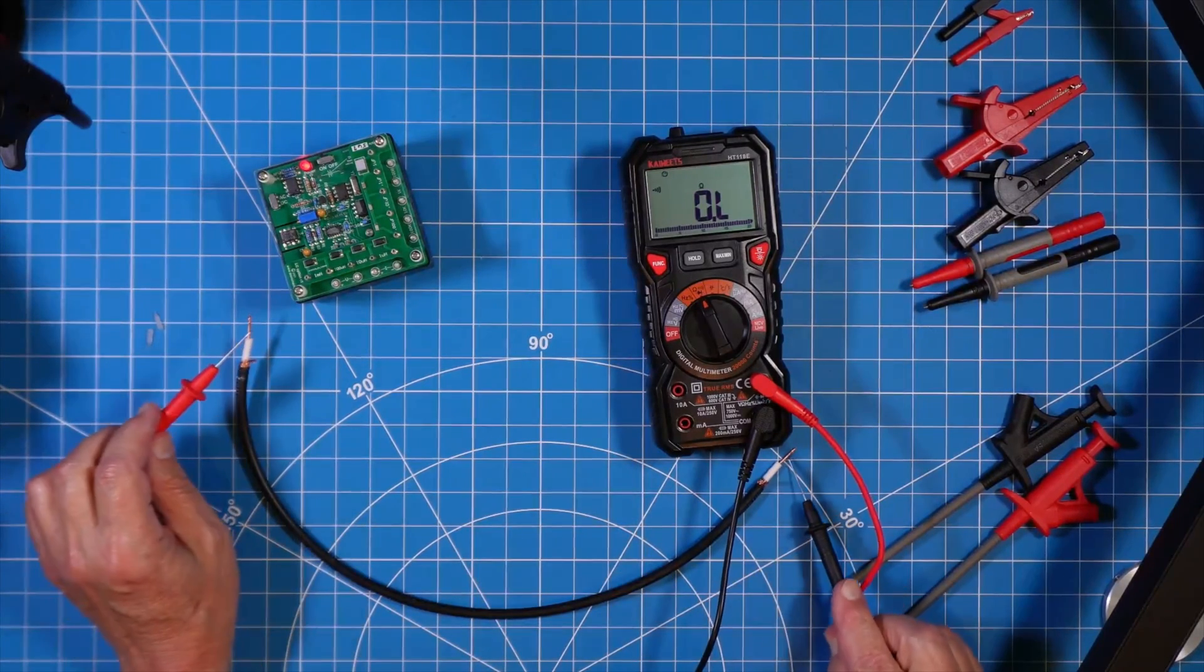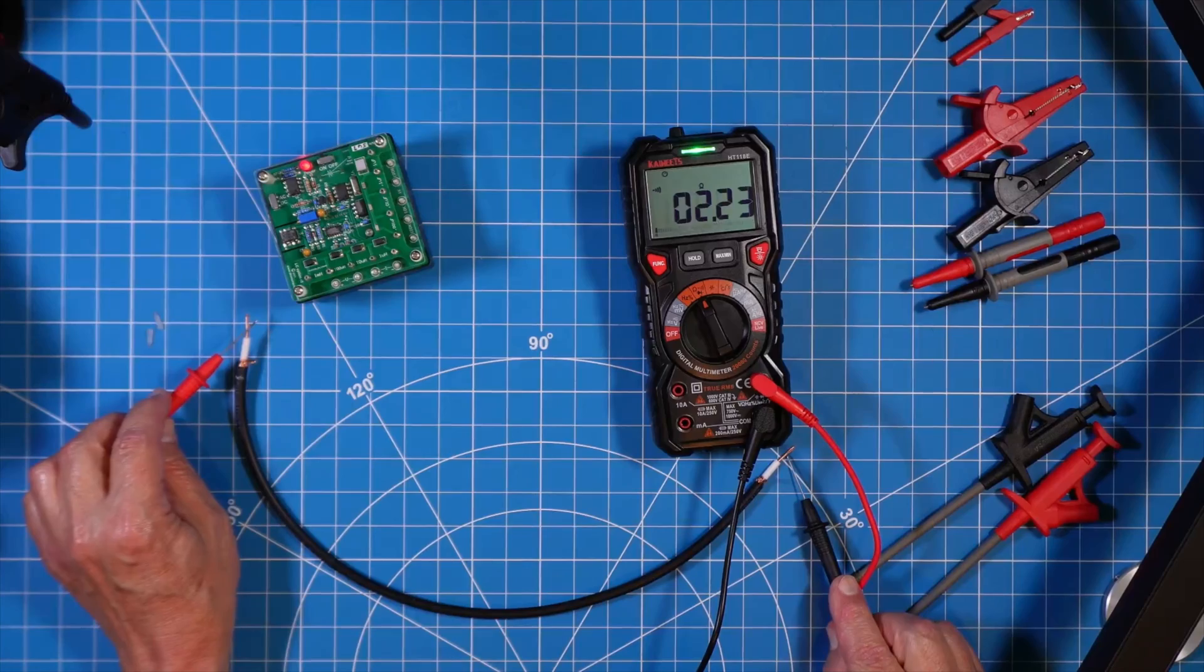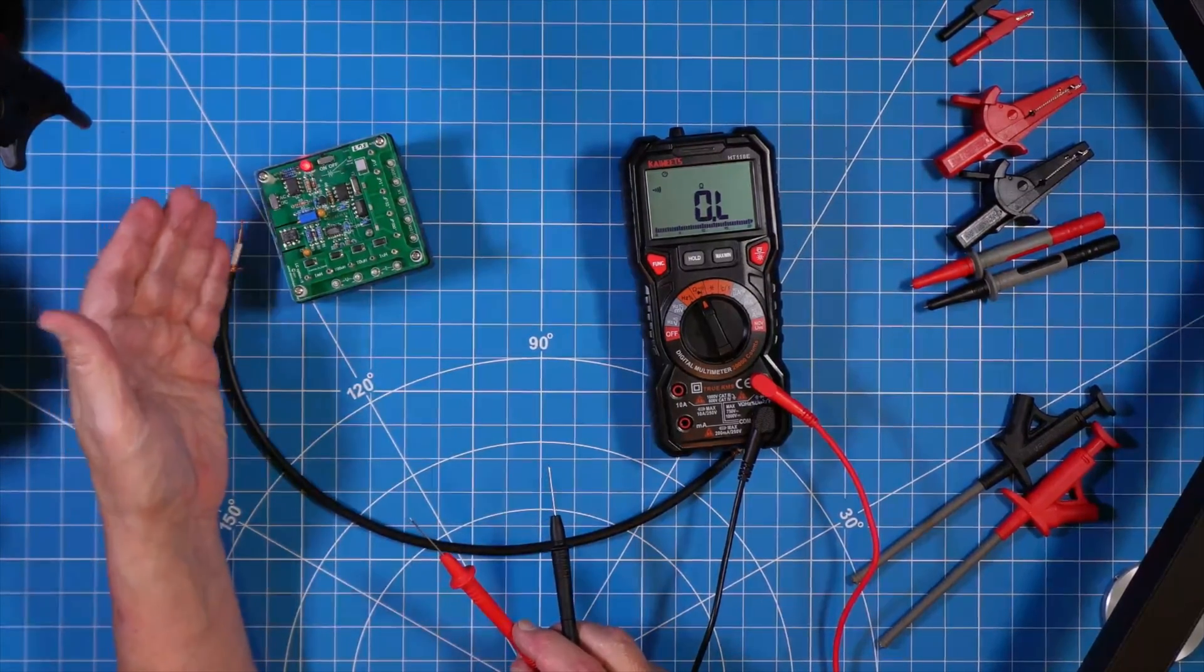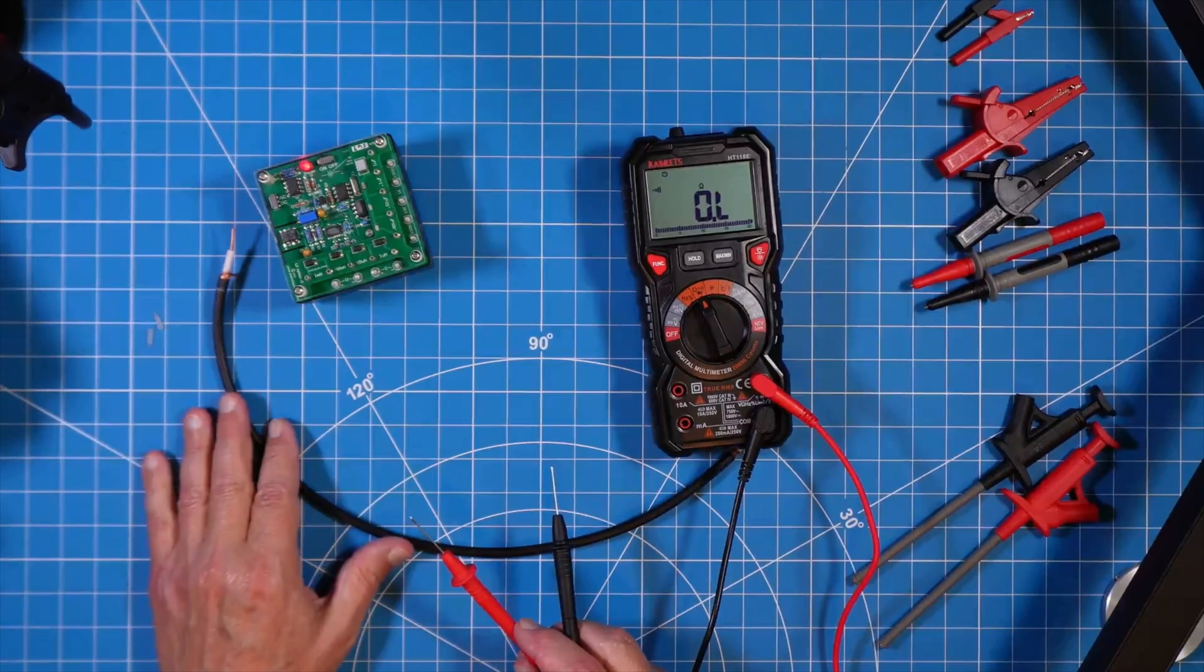Now, testing continuity, we can very quickly see that we have continuity. But what do you do when you have a wire that you don't have exposed copper or an exposed conductor?